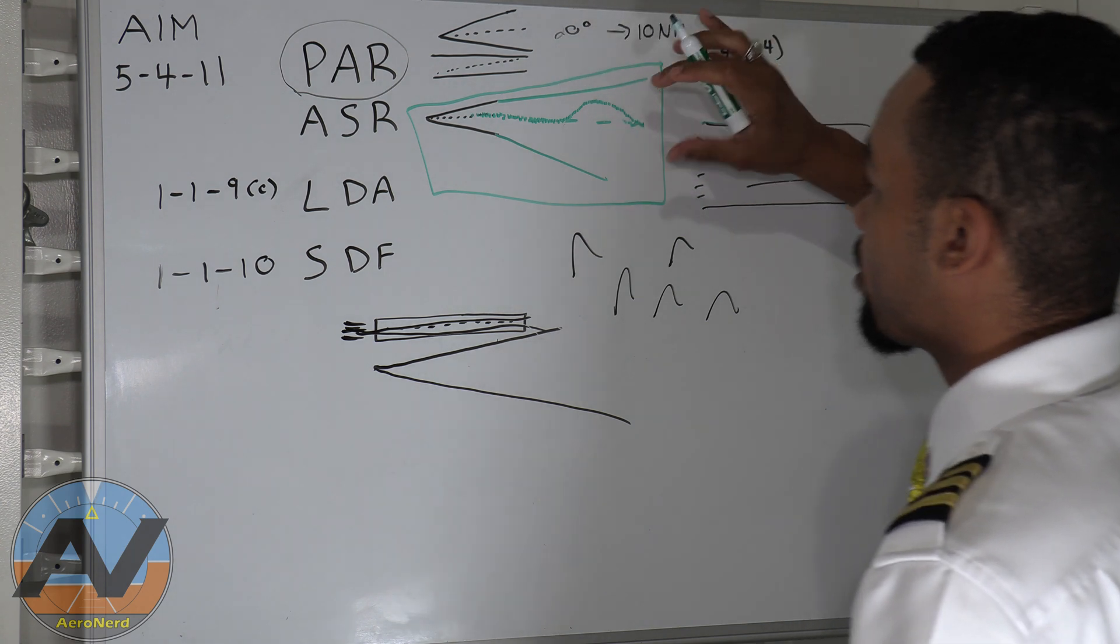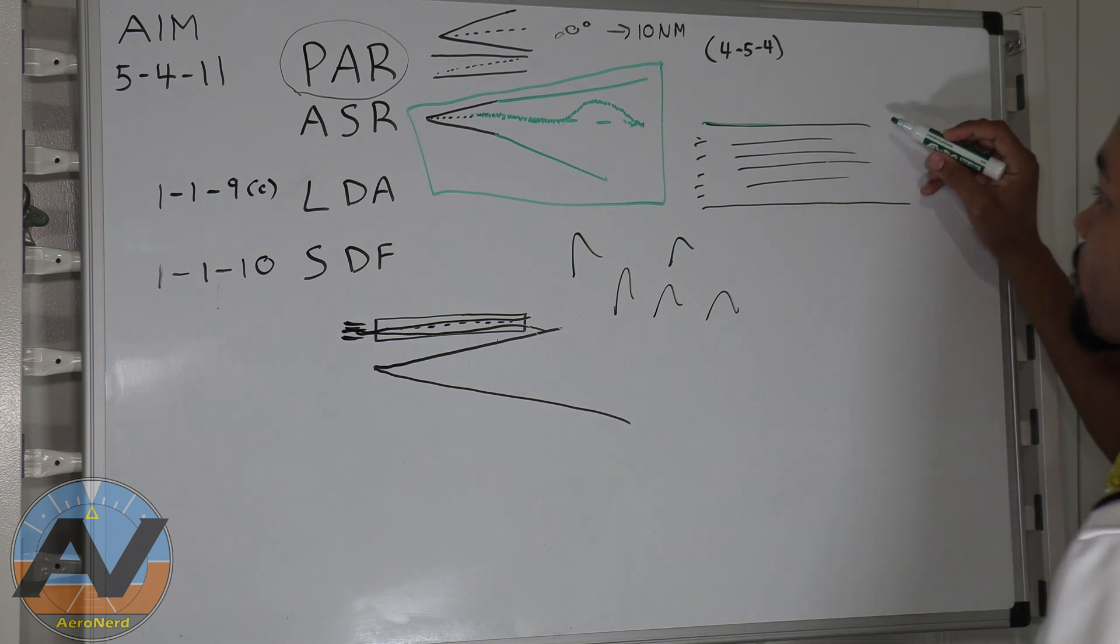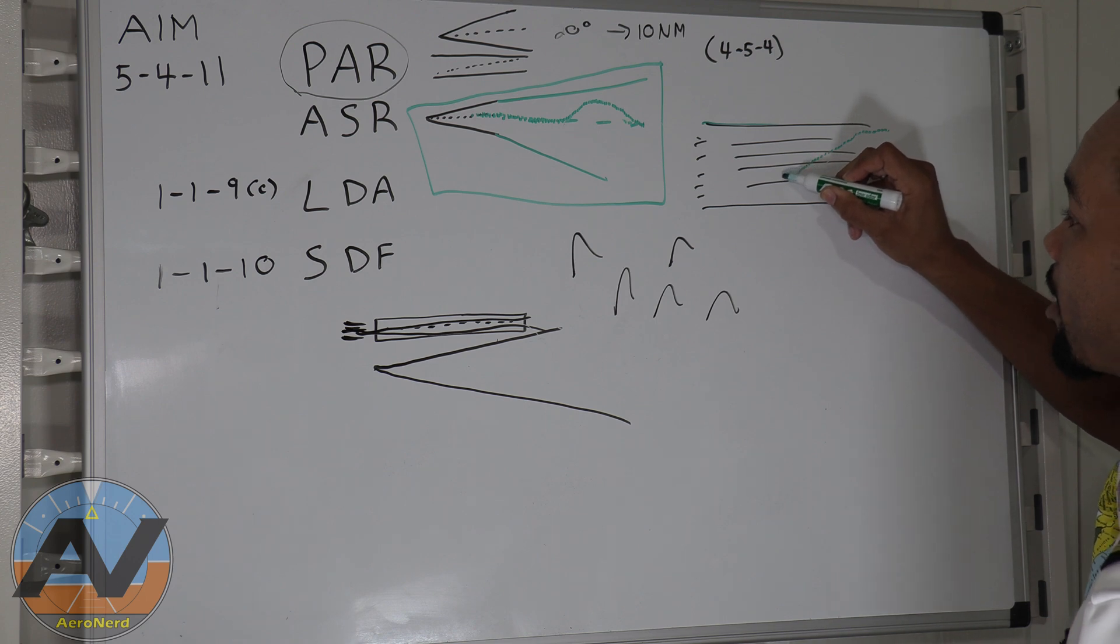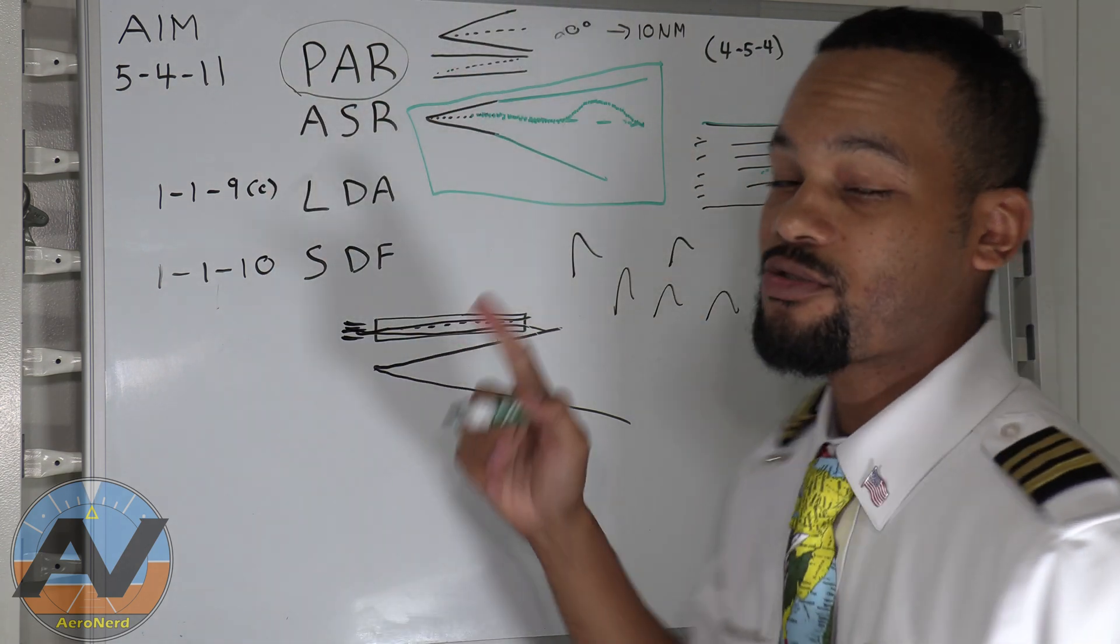On top of that, not only do they see the top down view, they also see the profile view right here, so they can actually see you coming in. They can see the altitude that you're at, and they can give you step down fixes. If you're getting a little too low, then they can ask you to climb, descend, do whatever they have to do. That's precision approach radar.